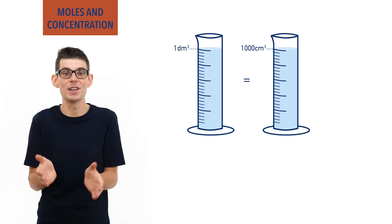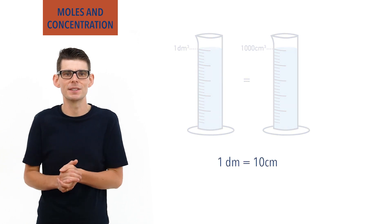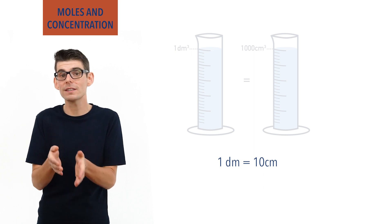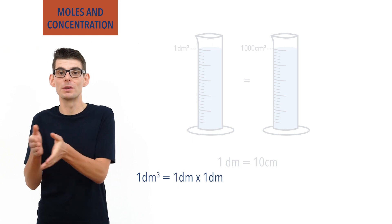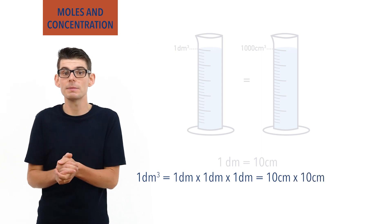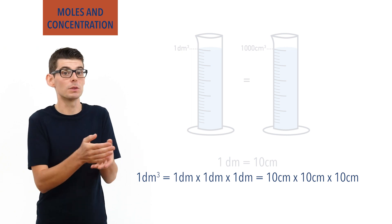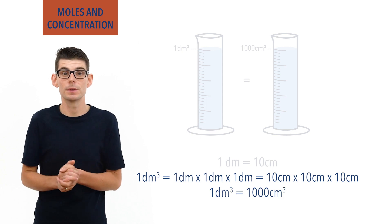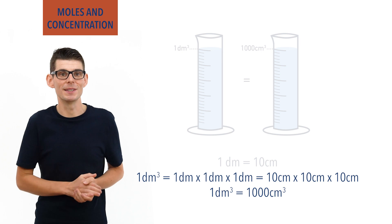This may seem strange when you see this for the first time, as 1 decimetre equals 10 centimetres — so where does the 1000 come from? Well, 1 decimetre cubed is the same as 1 dm × 1 dm × 1 dm, which is the same as 10 cm × 10 cm × 10 cm. 1 × 1 × 1 = 1, however 10 × 10 × 10 = 1000. As a result, 1 decimetre cubed equals 1000 centimetres cubed.